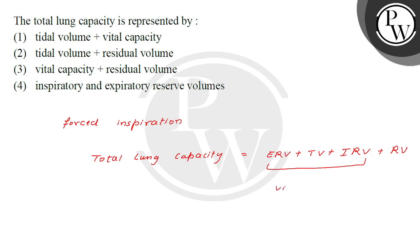The total of ERV, TV, and IRV we call vital capacity. Vital capacity is the maximum volume of air a person can breathe in after a forced expiration. It includes ERV, TV, and IRV.